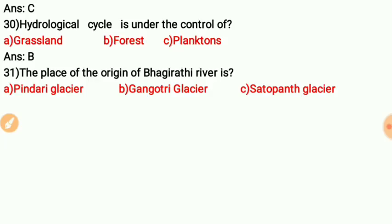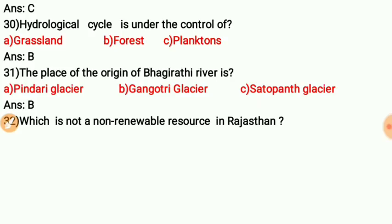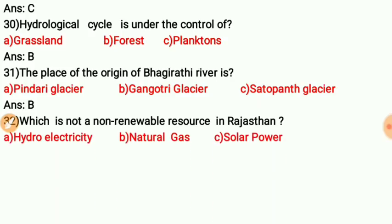Question thirty: The place of origin of the Bhagirathi River is — the correct answer is B — Gangotri Glacier. Question thirty-one: Which is not a non-renewable resource in Rajasthan? Option B is correct — natural gas.